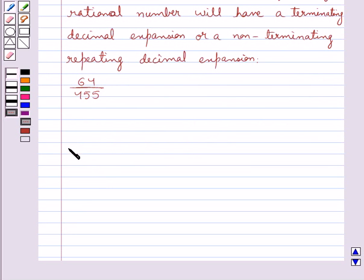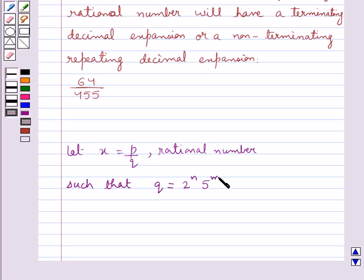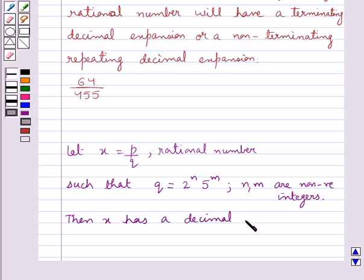Let x be equal to p upon q, a rational number, such that the prime factorization of q is of the form 2 raised to the power n into 5 raised to the power m, where n and m are non-negative integers. Then x has a decimal expansion which terminates.